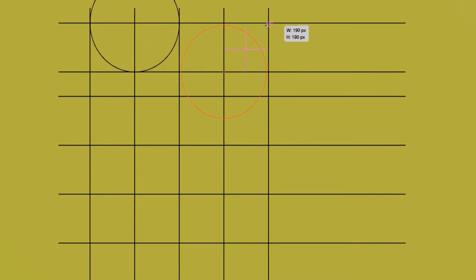Now hover over this intersection of lines. Maintain Shift and Alt and then click and drag to make a perfect circle until it meets this intersection. Now make circles as I am making.